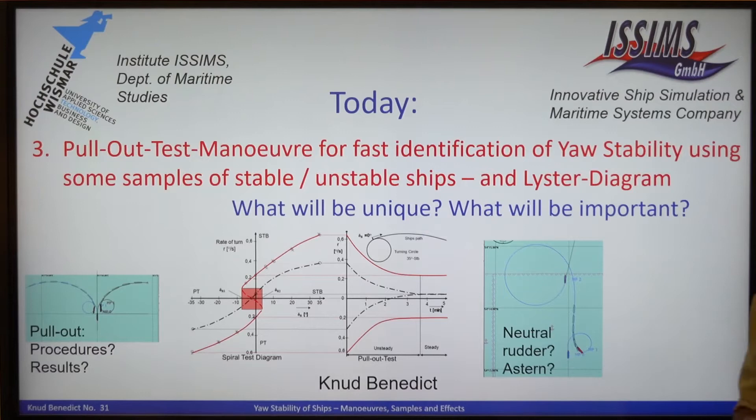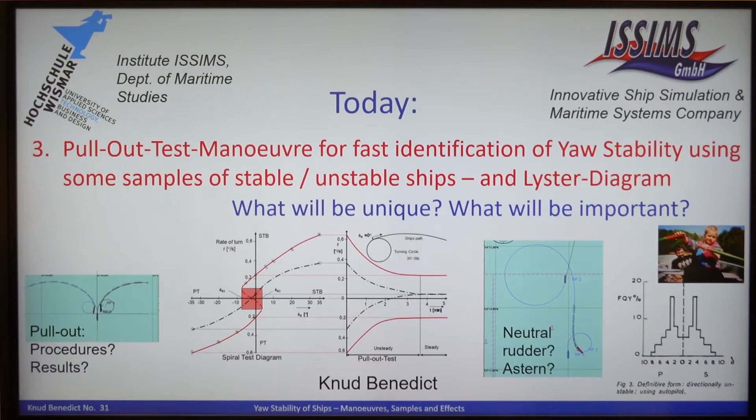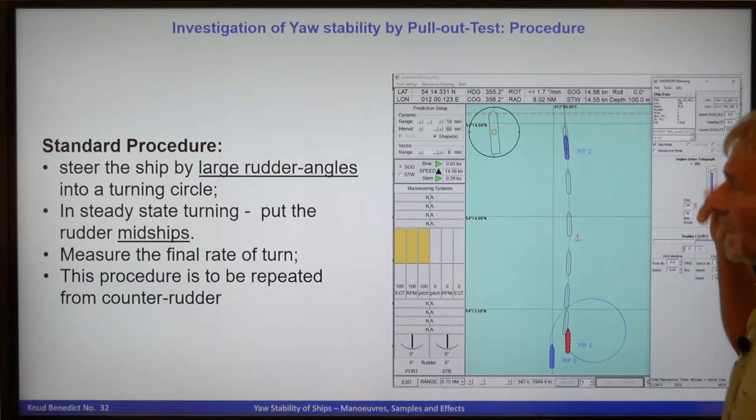I would also like to show what happens if I go not ahead but astern with my vessel. And finally I will point out the Lüster diagram, but the conclusion will be shown using not a big ship but a rowing boat together with my son. This is the plan for today.